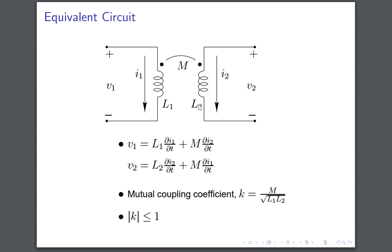The key thing to note here is this M can be related to the coupling factor k, which we call the mutual coupling coefficient, and that is M equals k times square root L1 L2. And this k is less than or equal to 1.